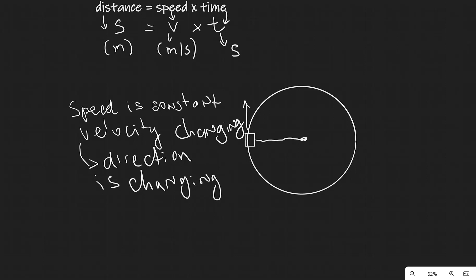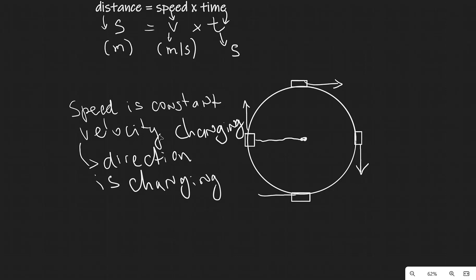For the object swinging in a circle, at one point the direction is pointing north, then fully to the right, then straight down, then fully to the left. So the direction keeps changing. However, the magnitude of the speed remains exactly the same.